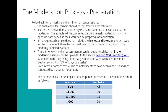Moderation has replaced the standard verification process — there is no more standard verification. You submit learner work via the Learner Work Transfer platform, which I'll show you later. You'll be assigned a moderator. The sample size depends on your cohort: 1-10 learners means all are submitted; 11-100 learners means 10 are selected; 101-200 means 15; over 200 means 20.